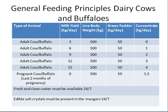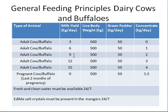For example, if you have an adult cow or buffalo with a live body weight of 500 kilograms and she is giving 3 kilograms of milk, we will offer her 50 kilograms of green fodder and 0 kilograms of concentrate. If the same cow yields 6 kilograms of milk per day, we give the same green fodder but 1 kilogram of concentrate per day. If milk yield increases to 9 kilograms, concentrate increases to 2 kilograms per day.